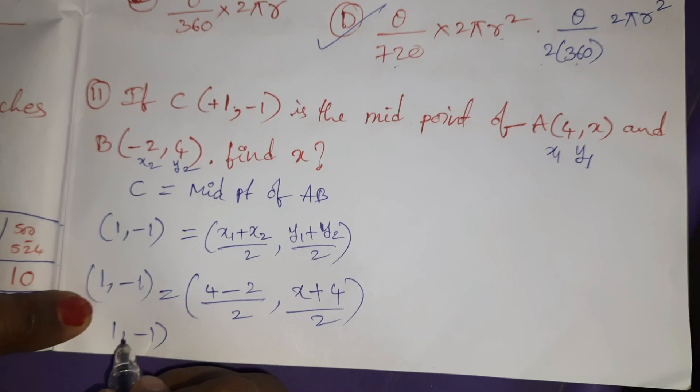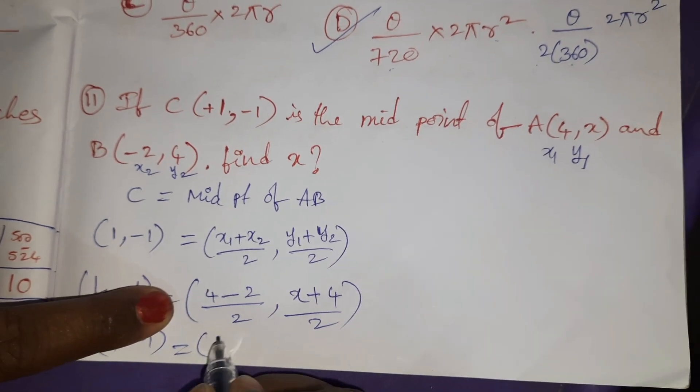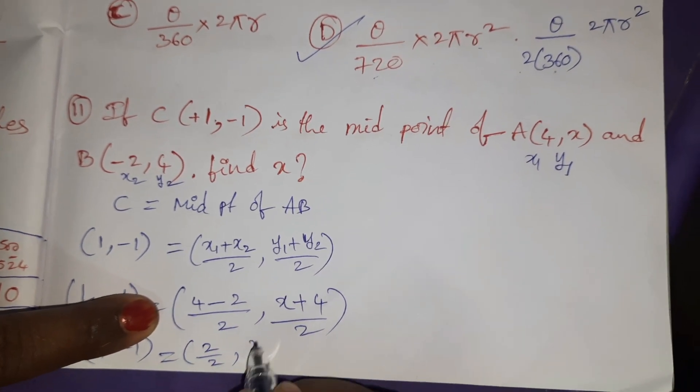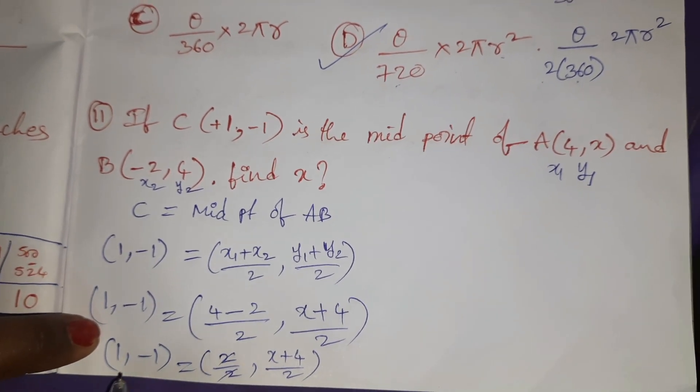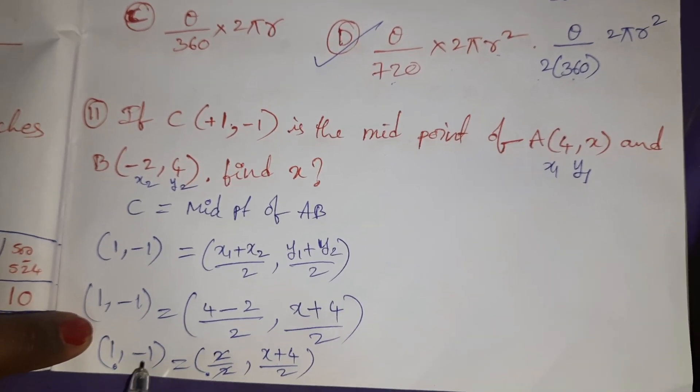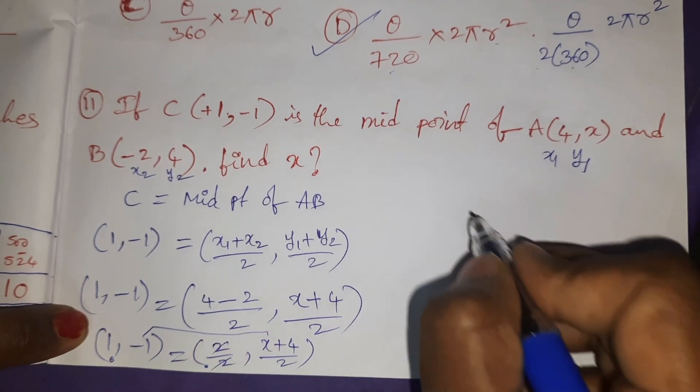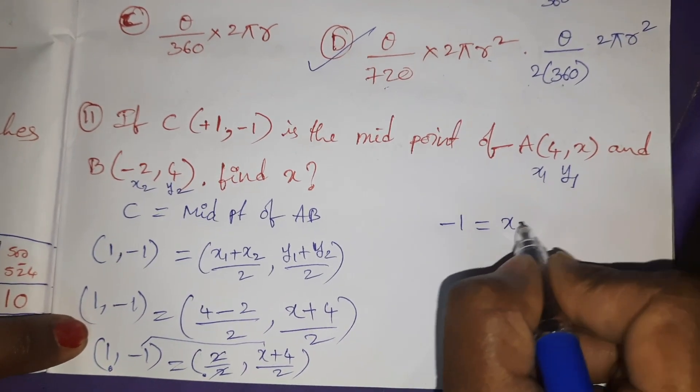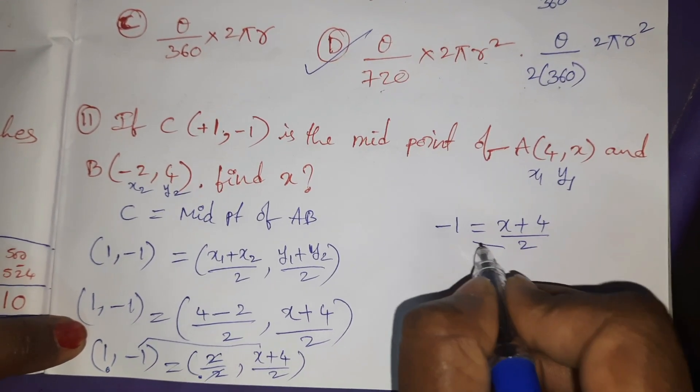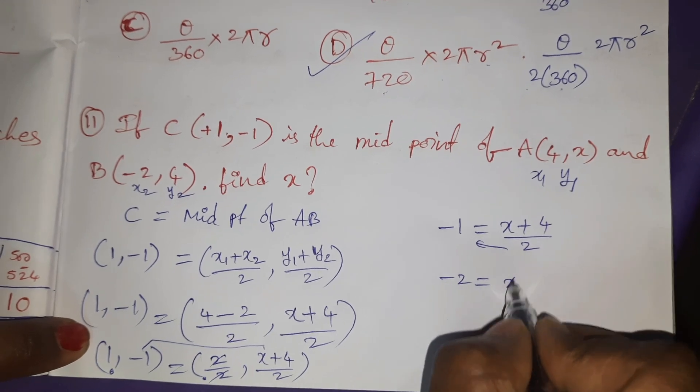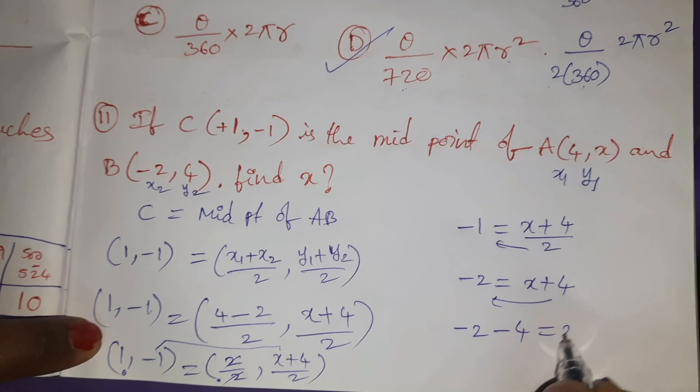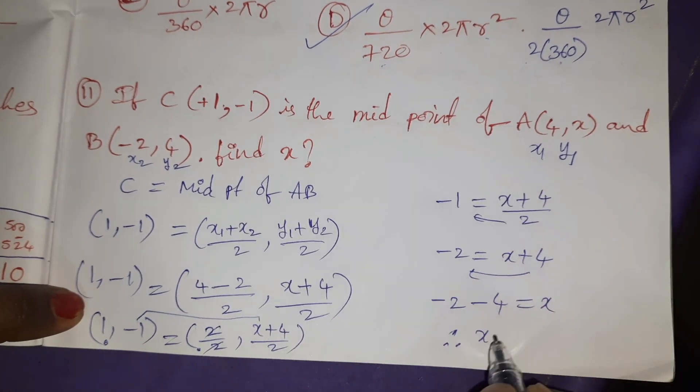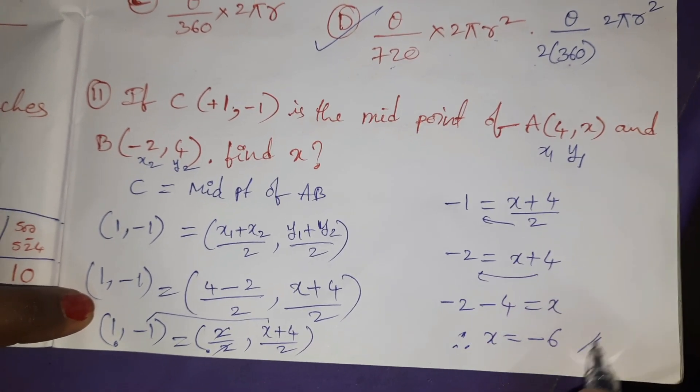1, -1 = 2/2, (x + 4)/2. 2s cancel. Comparing the coordinates: 1 = 1, other is -1 = (x + 4)/2. Cross multiplication: -2 = x + 4. Sending 4 to left side: -2 - 4 = x. Therefore x = -6.